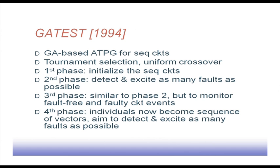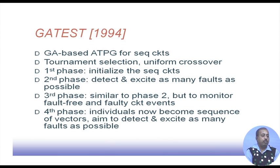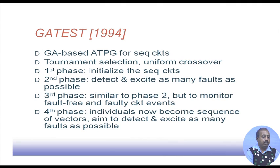Another tool, GA-TEST, was reported in 1994. This is a GA-based ATPG for sequential circuits. It uses tournament selection and uniform crossover as previously discussed. The first phase initializes the sequential circuits. The second phase detects and excites as many faults as possible. The third phase is similar to phase two but monitors fault-free and faulty circuit events. The fourth phase treats the individual as a sequence of vectors and aims to detect and excite as many faults as possible.